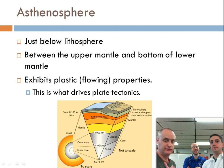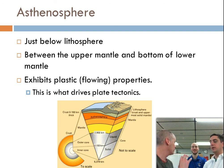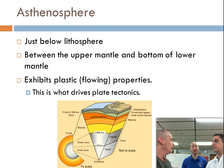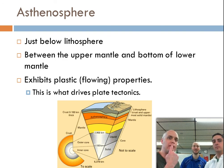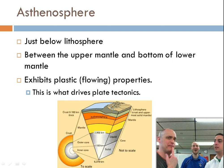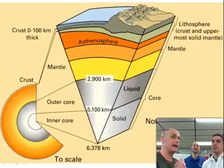We say the asthenosphere exhibits plastic properties because in science the word 'plastic' actually means flexible — that's actually how plastic got its name, because you form plastic molds by pouring something and then it cools. The asthenosphere being flowing and flexible is what drives all the processes we're going to talk about in this unit. It's extremely important — the asthenosphere is what makes the rocky plates move, and we'll talk more about that.